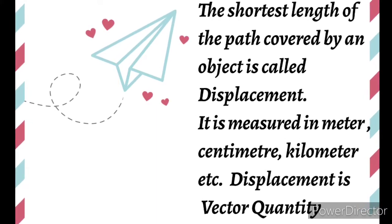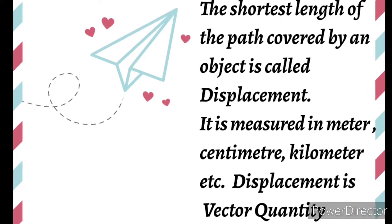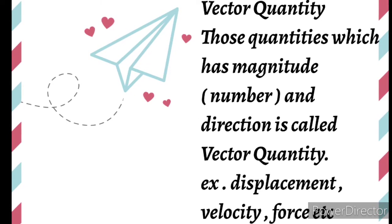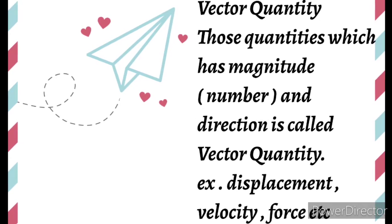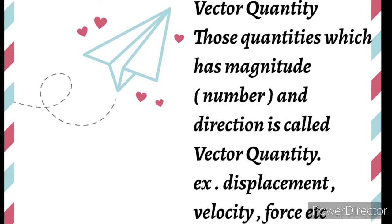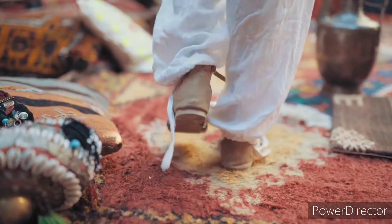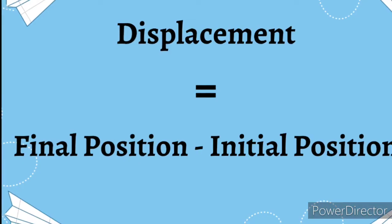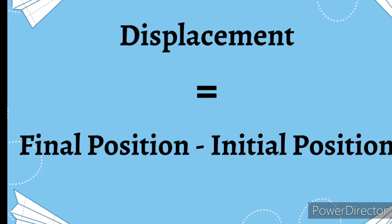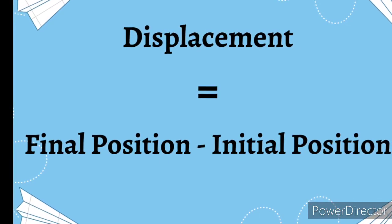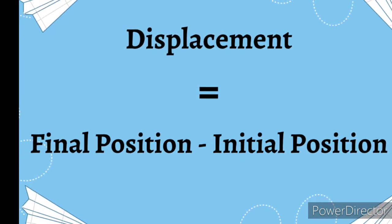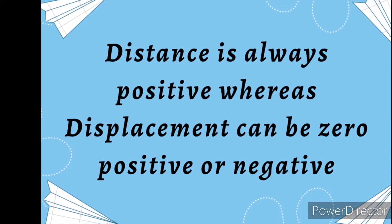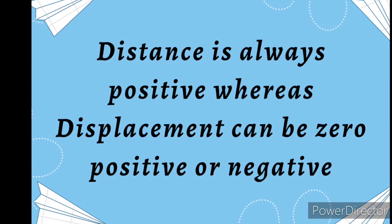Displacement can be measured in meters, centimeters, kilometers, etc. Displacement is a vector quantity. Those quantities which have both magnitude and direction are called vector quantities. Examples include displacement, velocity, and force. Displacement can be calculated using the formula: final position of the object minus initial position of the object.